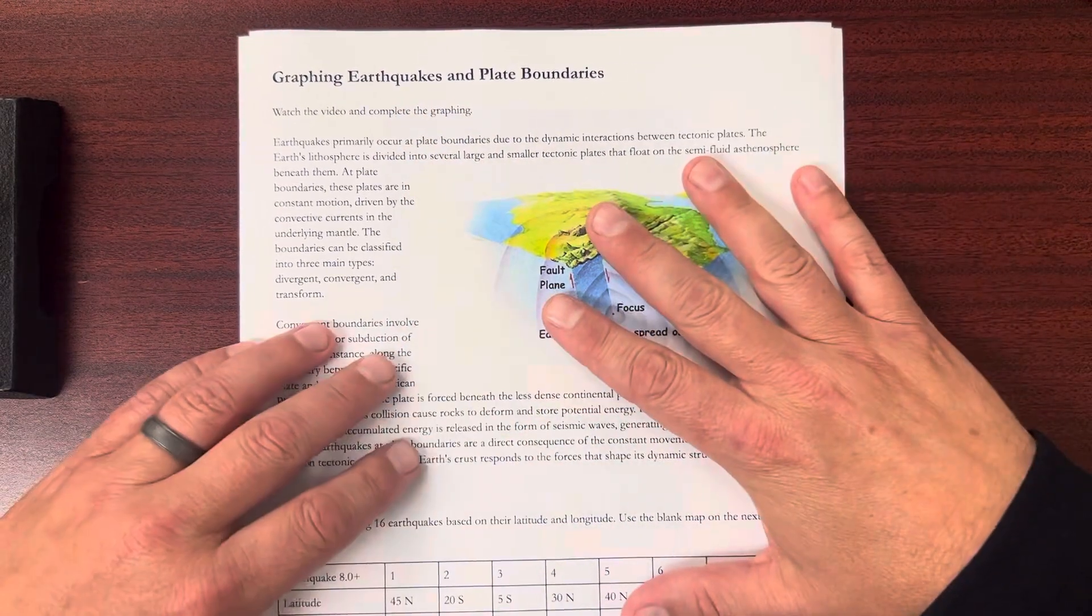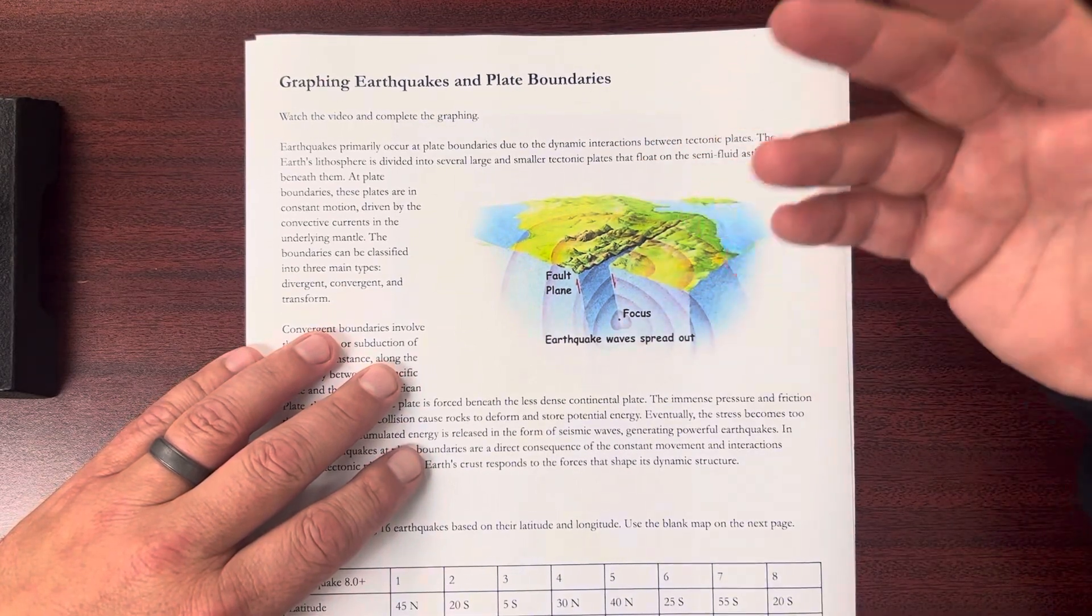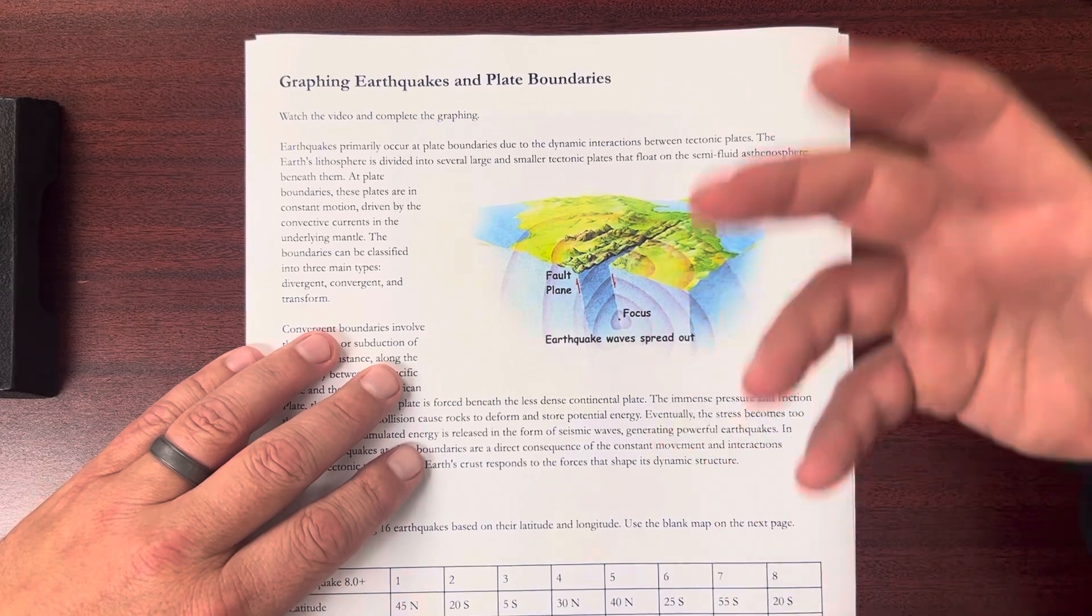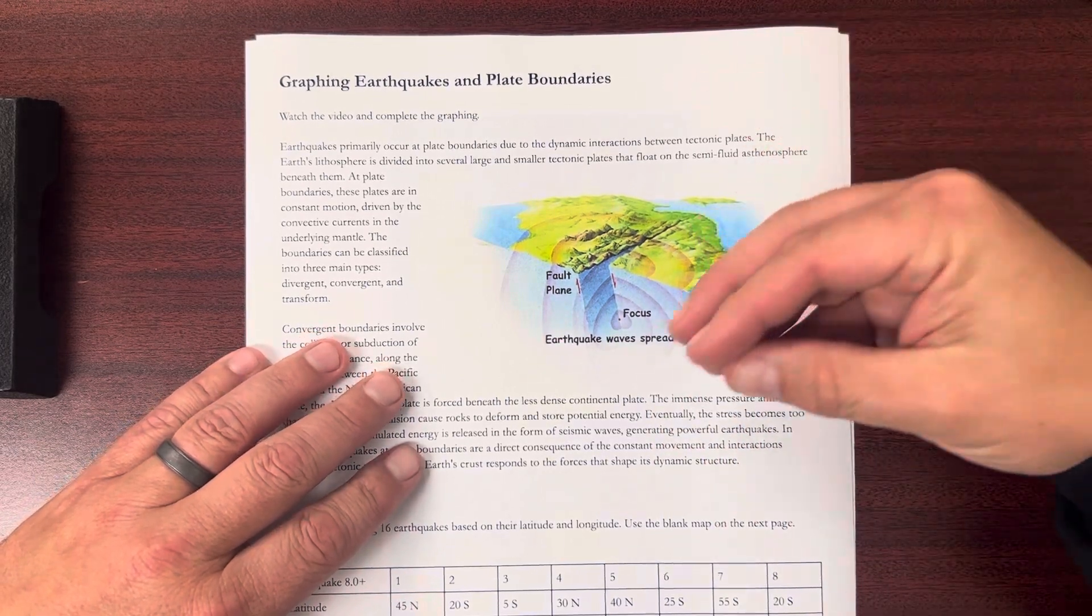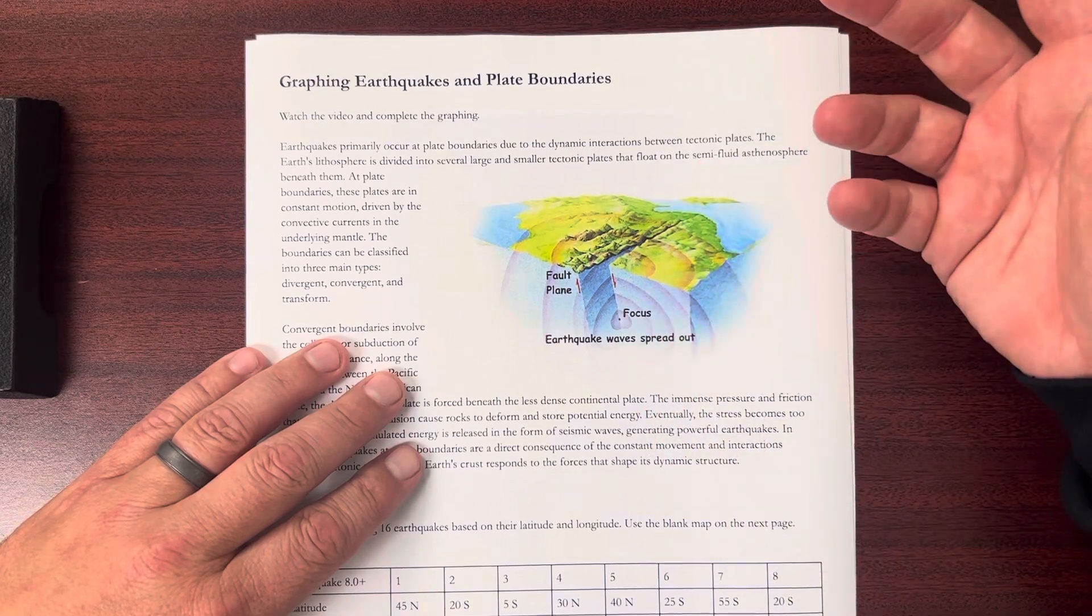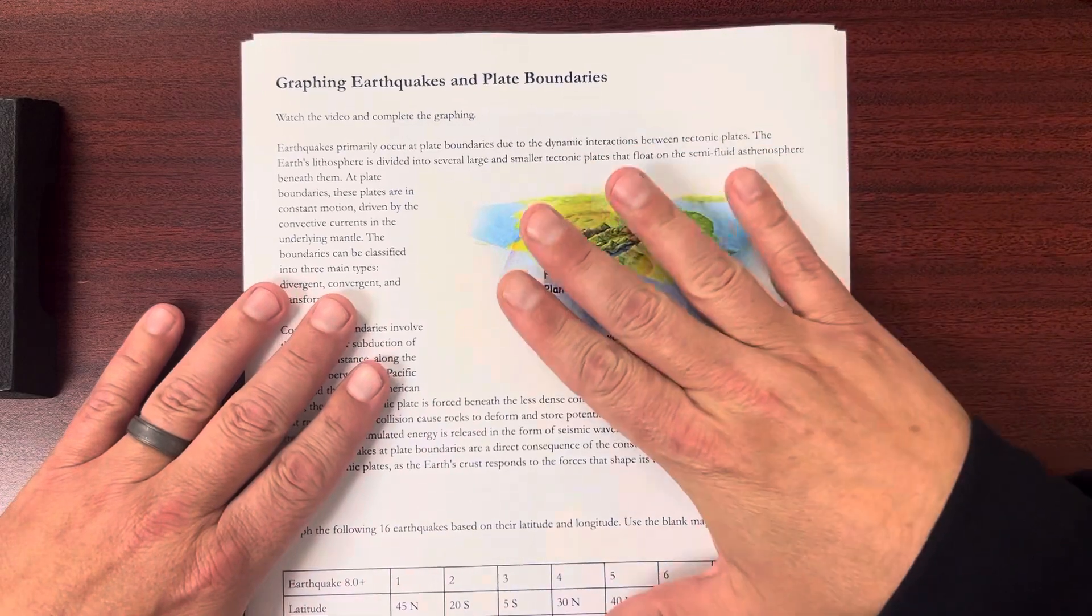Now, we can't map them all. At any given time around the Earth, there might be earthquakes that are going on, even earthquakes that are mild in the 4 to 5 range. There could be thousands of those every year around the globe. We're just going to graph 16.